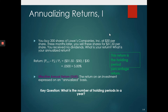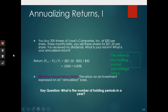Now here comes a very important concept that sometimes students get confused with. This is called the holding period return, because the investor held the stock for three months. What is the effective annual return? The effective annual return is the return the investor would get if they kept invested in this stock and kept earning the same return. First, how many holding periods are there in one year? Since the holding period is three months, how many three-month periods are in a year?